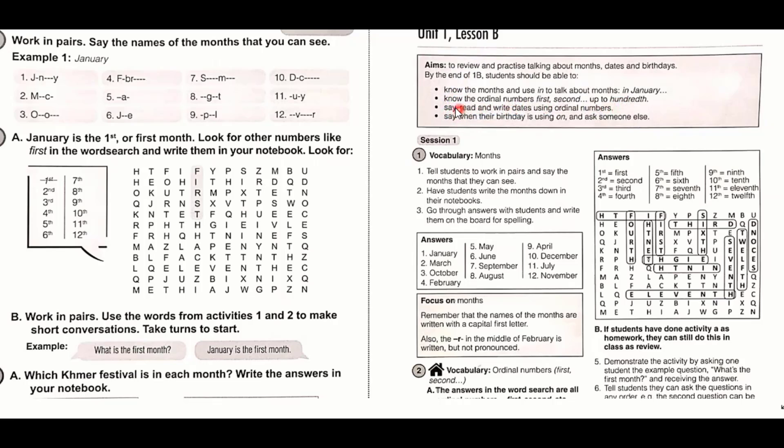We have 'know months and use in to talk about months in January.' Let's take a look at this. The word 'know' is also a kind of non-action verb, so better use another verb in terms of identify or determine or something like that, or we can say explore - other action verbs rather than using non-action verbs like this. We can use the rest but change the word to the proper word.